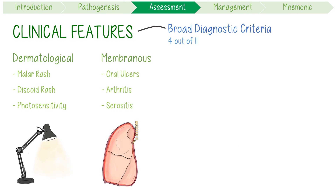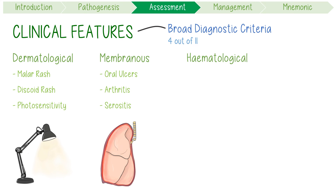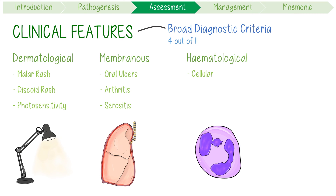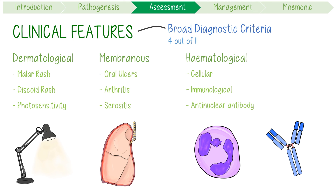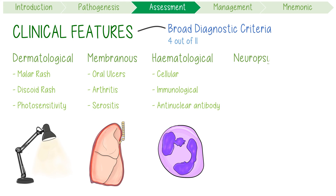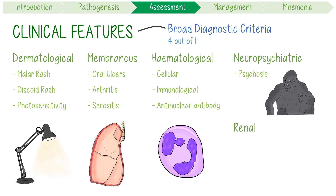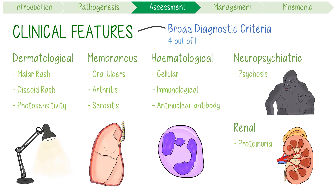There are three issues that you can note in the blood: hematological cell line issues like hemolytic anemia, leukopenia, or thrombocytopenia; immunological features including a positive serology for a specific antibody; and finally, having a positive antinuclear antibody. The last two criteria are neuropsychiatric issues like seizures or psychosis, and renal features like persistent proteinuria or cellular casts.